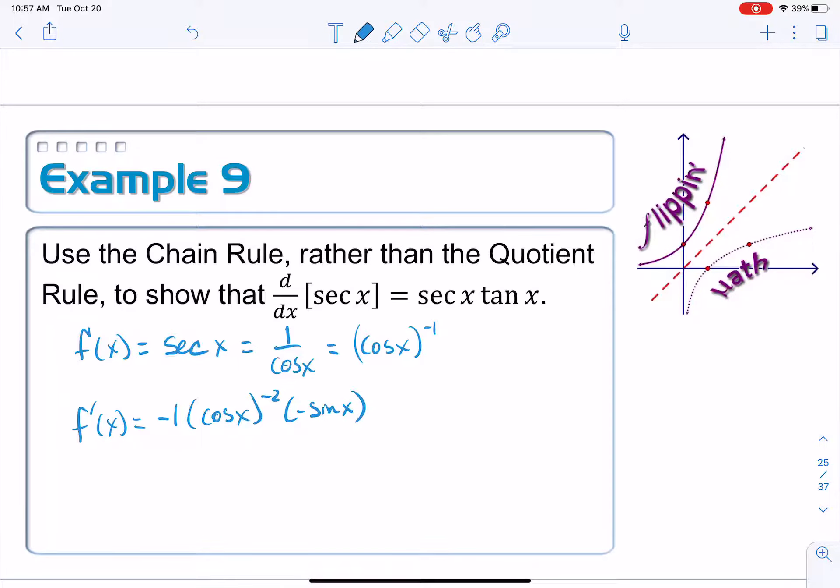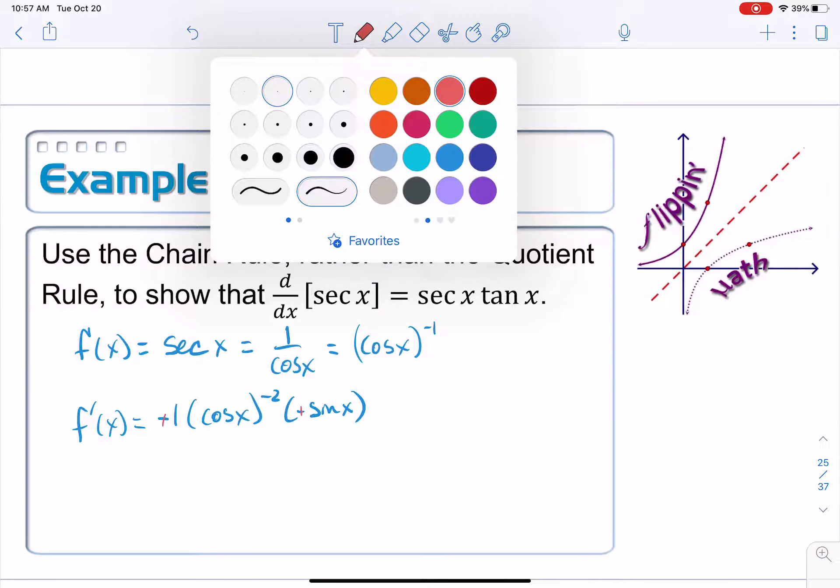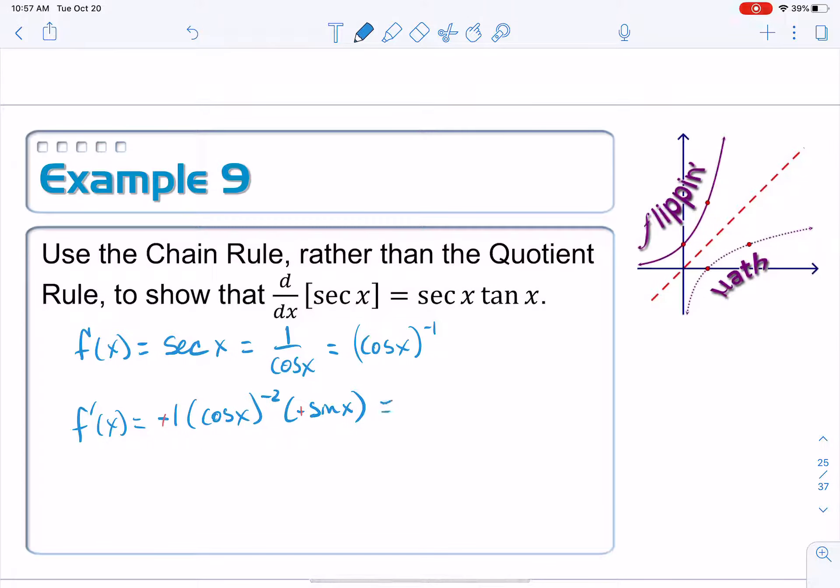Okay. Let's clean this up a little bit. Like these negatives cancel, which is nice and satisfying. And then maybe I get rid of this negative exponent and make that 1 over cosine squared times sine x. Wait a minute. That's not what this is. Did we make some sort of mistake? No.